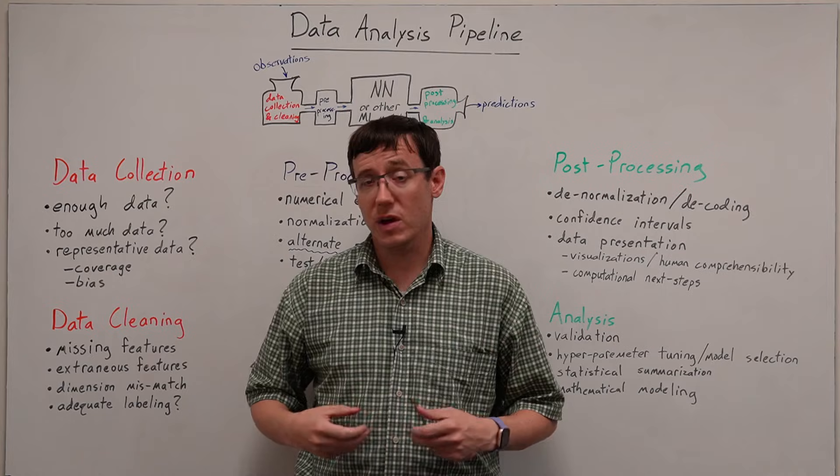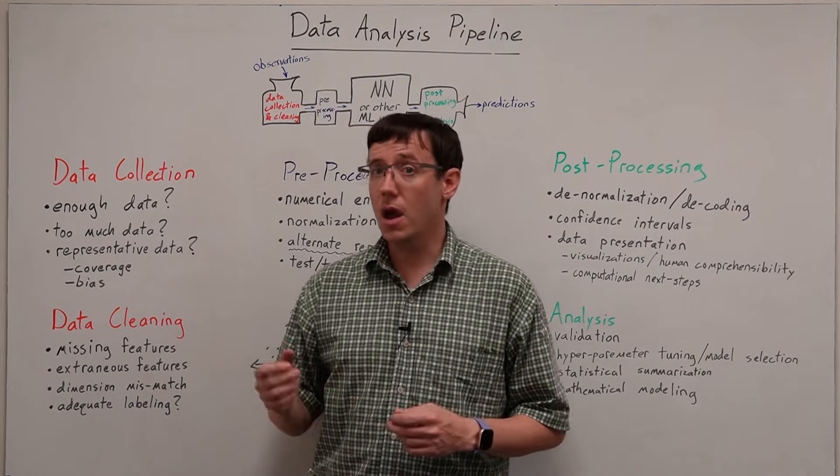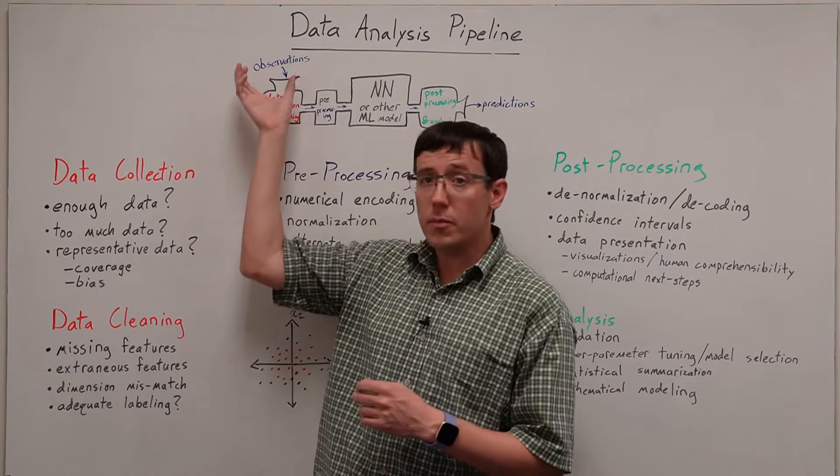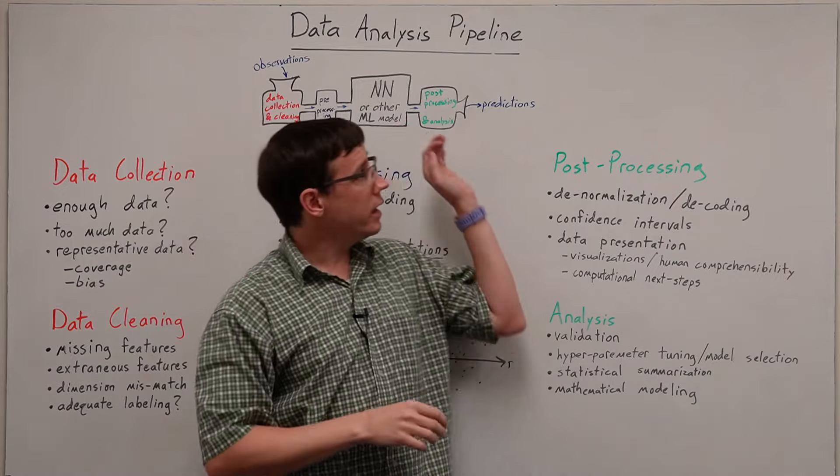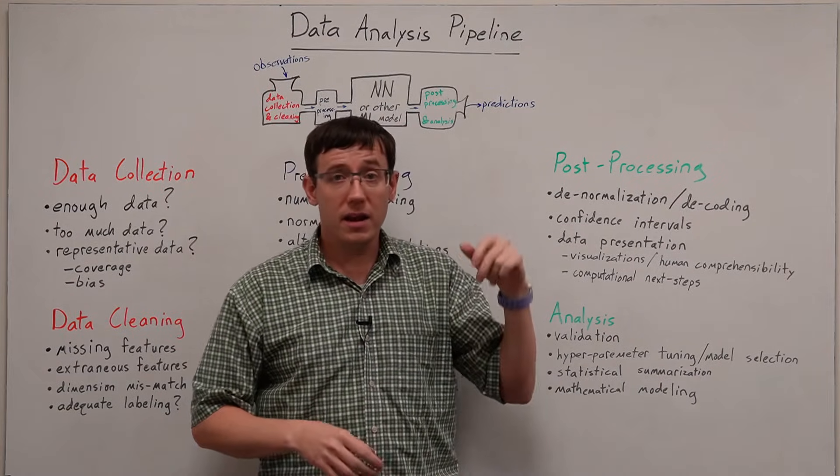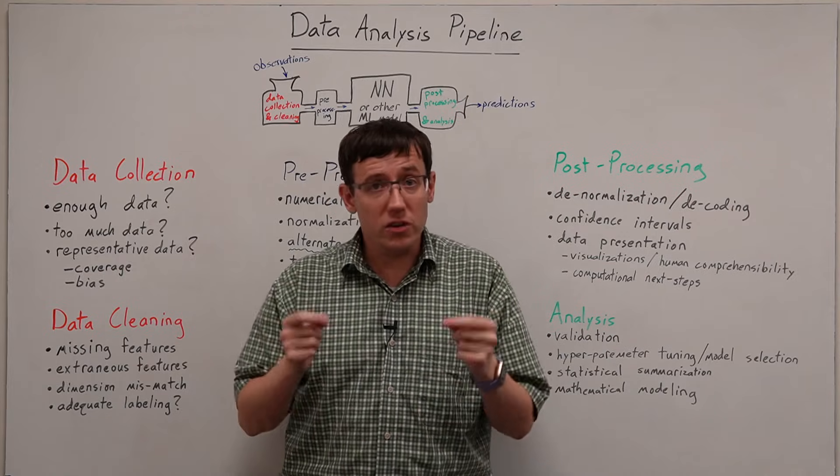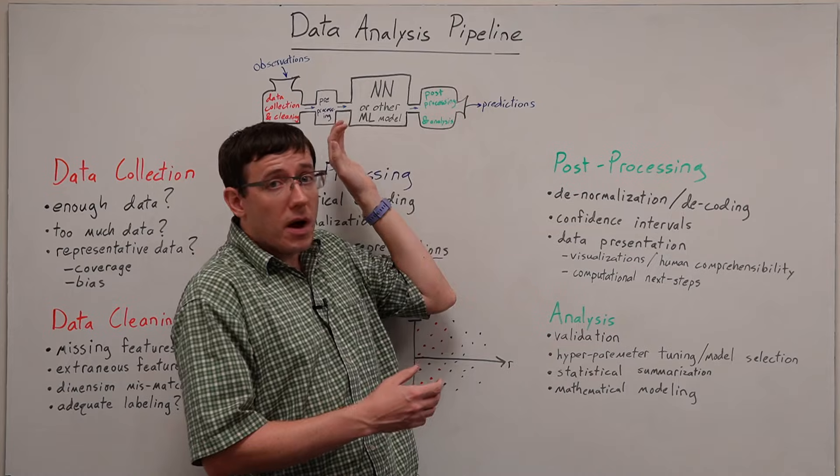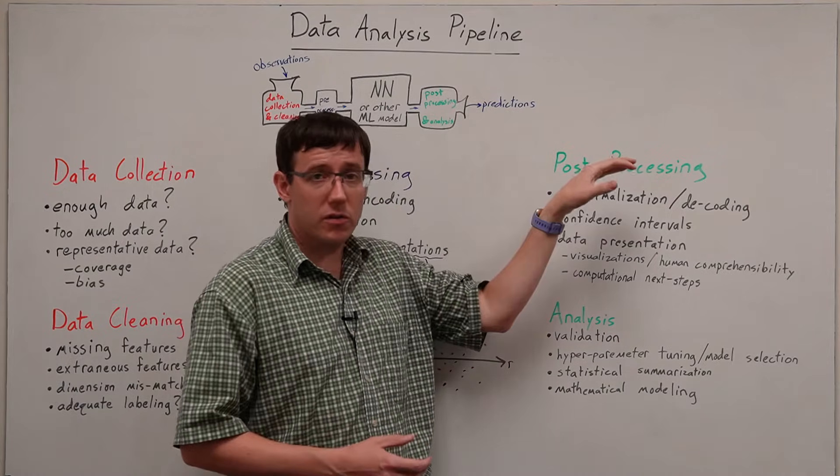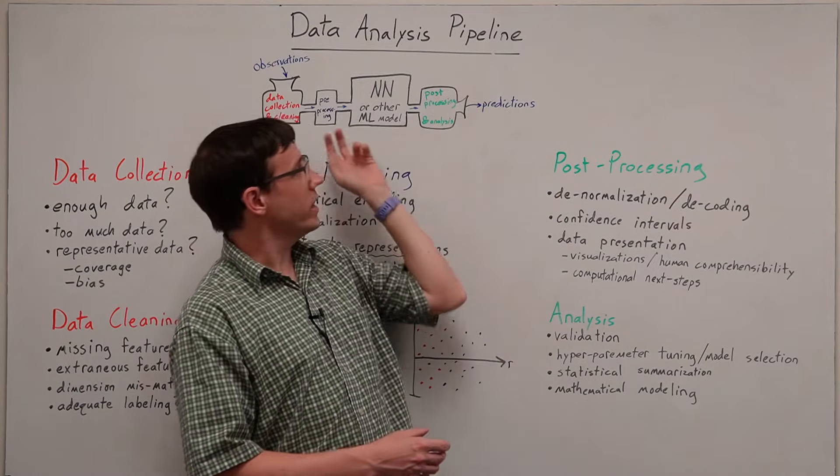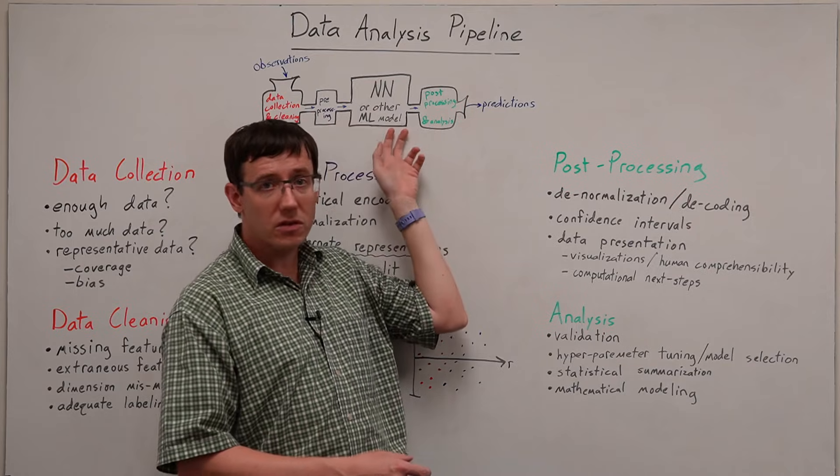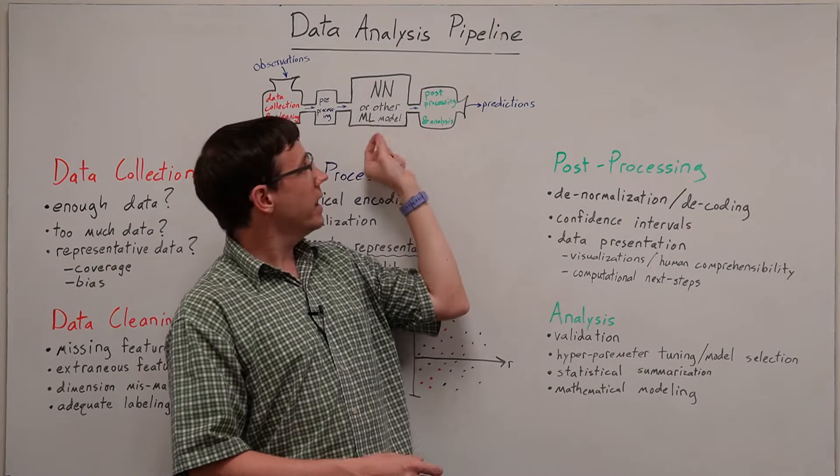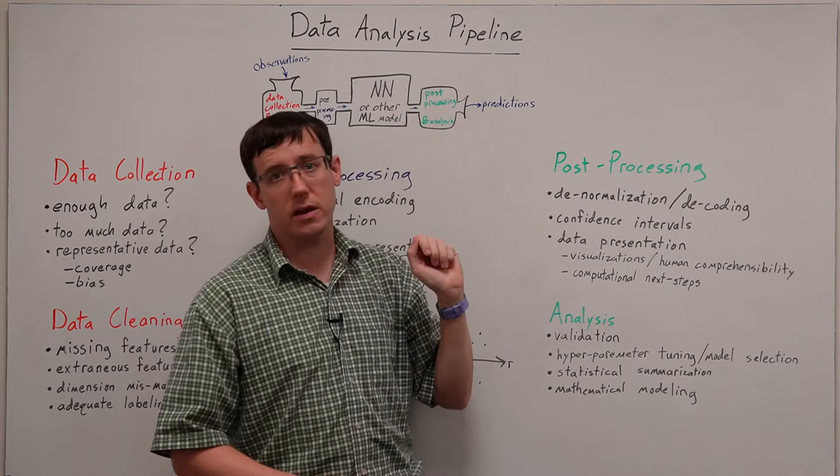This analogy reminds us that whenever we're doing machine learning, our goal is to turn observations of the world into predictions about the world, and that the neural network is just one step in that process. As we move from observations to predictions, the pipeline reminds us that we need to consider what stages our data goes through and how each stage feeds into the next.